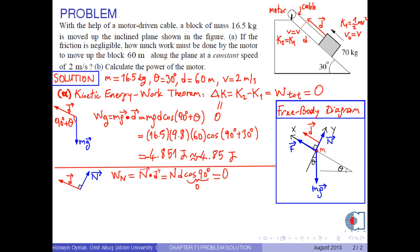Secondly, the work done by the normal force is zero since the angle between the normal force and the distance vector is 90 degrees.